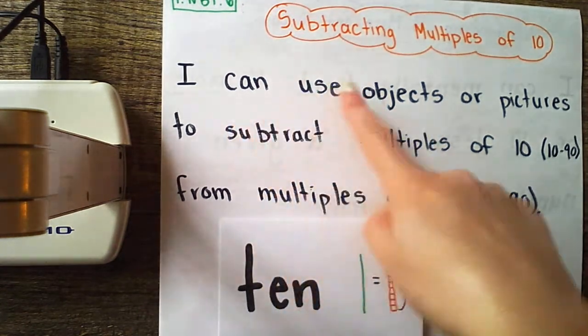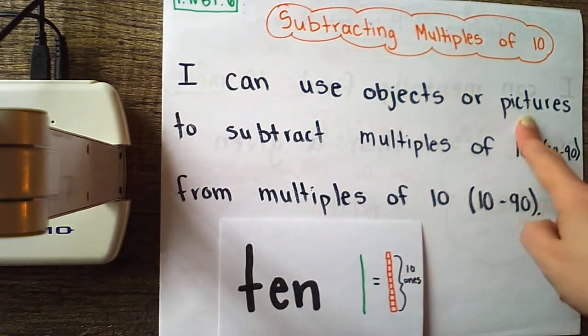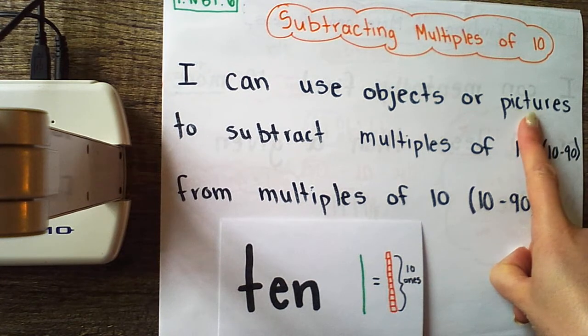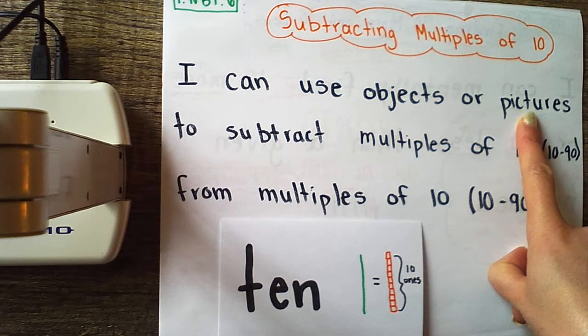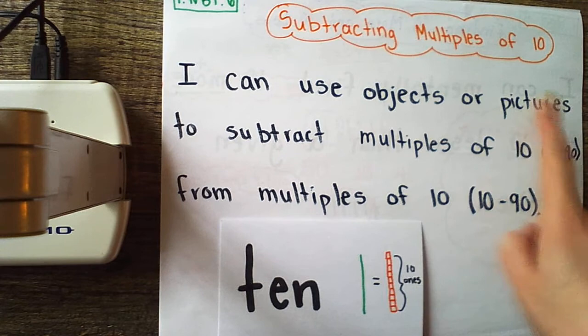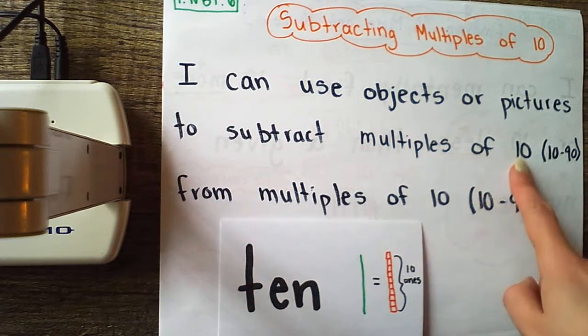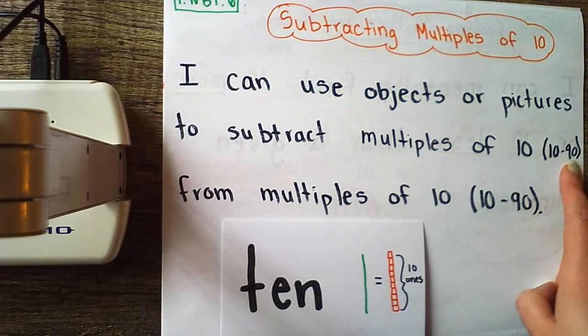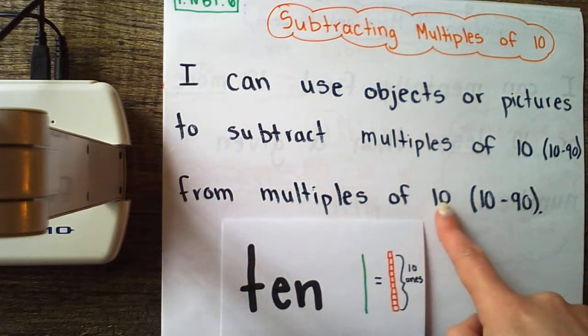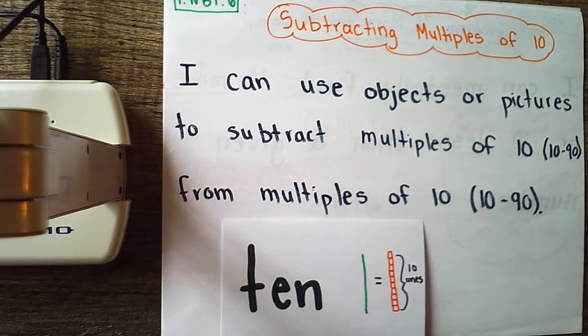Our job today is to use objects or pictures - you know how much I love using pictures because you always have a pencil and paper available. We're using objects or pictures to subtract multiples of 10 in the range from 10 to 90. Let's talk about what this means.